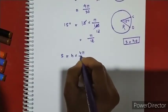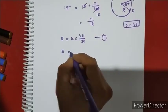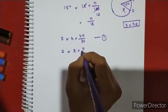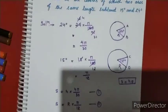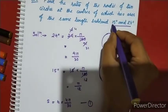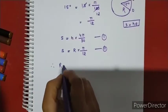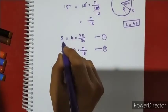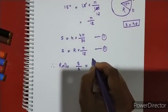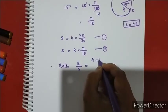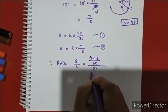Setting up the equation: r1 times 2 pi by 15 equals r2 times pi by 12. The ratio r1 to r2 can be found by dividing both sides.